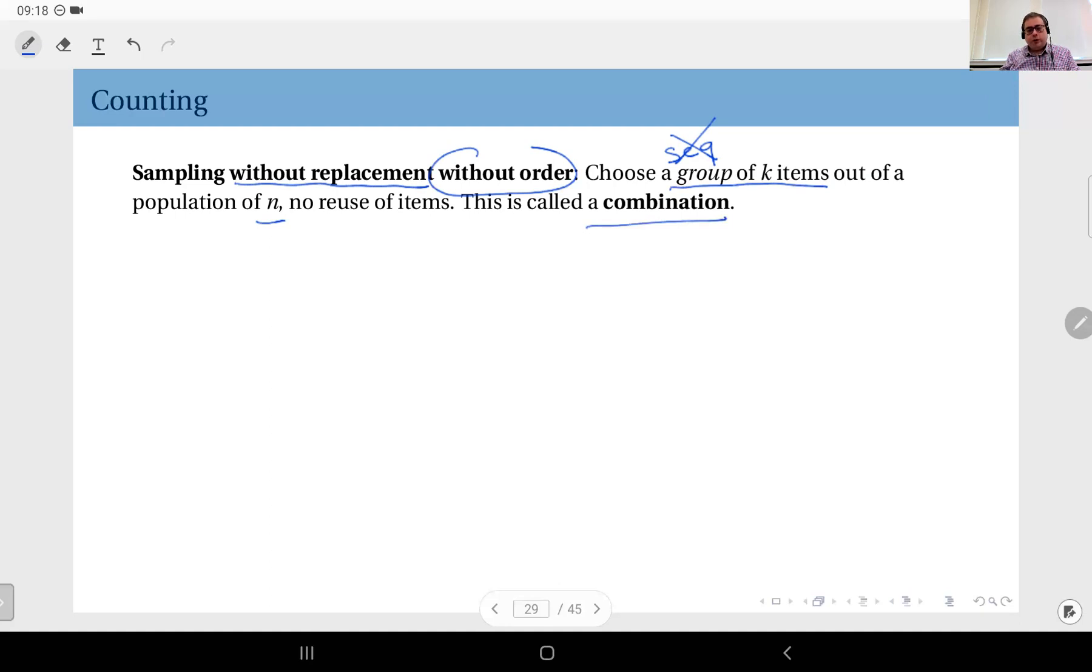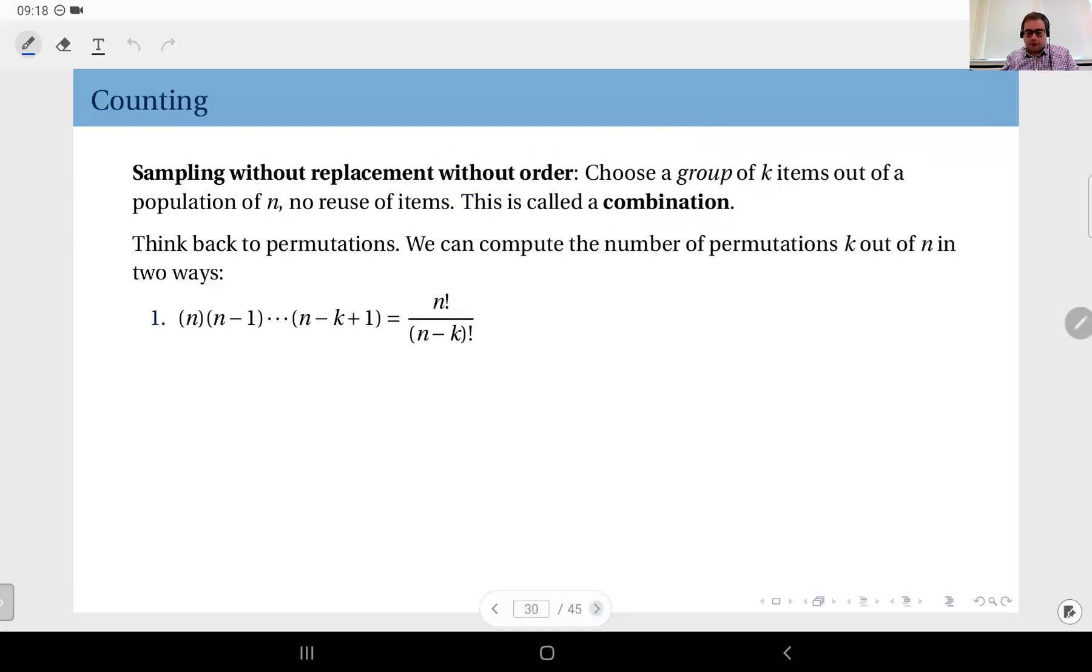Okay, now how can we derive the general formula for a combination of k items out of a population of n? To do this we are going to think back to permutations, and we can compute the number of permutations k out of n in two ways. First one we have already seen: selection one I have n alternatives, selection two I have n minus one alternatives, and so on, so that gives me this result. We have already done this.